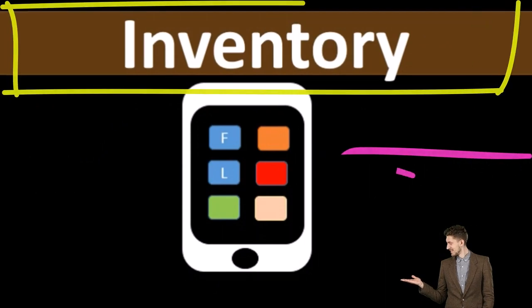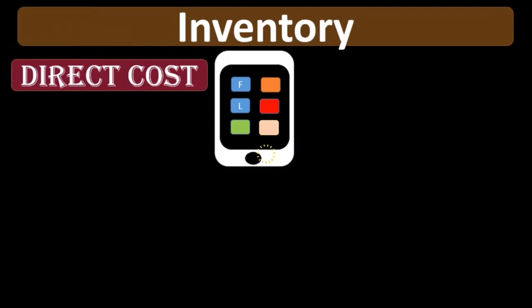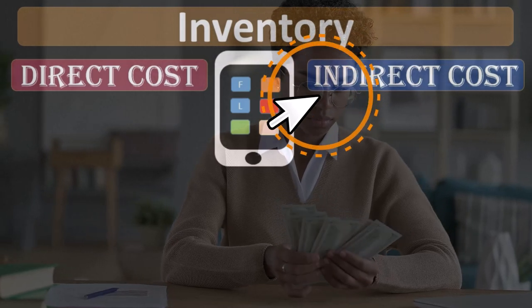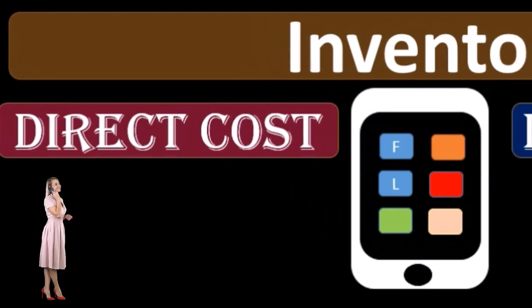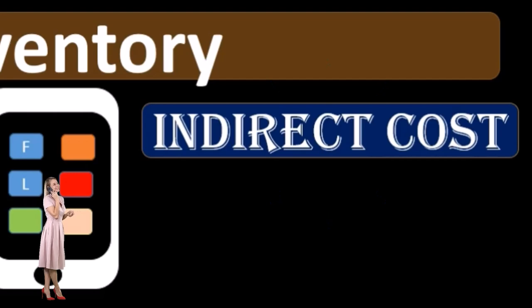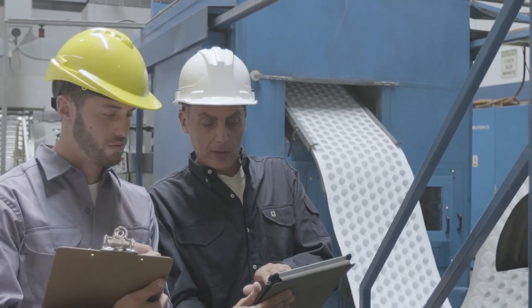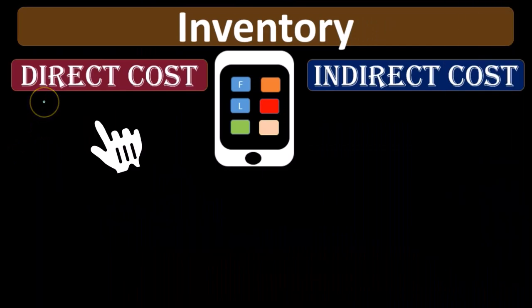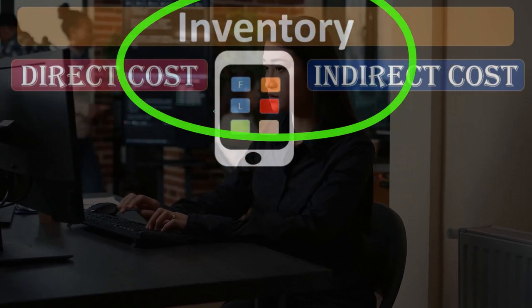For example, we're going to say the inventory is a tablet. If we're trying to group the costs, one way we can group them in relation to the production of inventory could be direct costs versus indirect costs. This will be useful because we're going to have to apply the costs in some way to the specific units of inventory, batches of inventory, or to some type of process depending on what type of accounting system we are using — typically a job cost system or a process cost system.